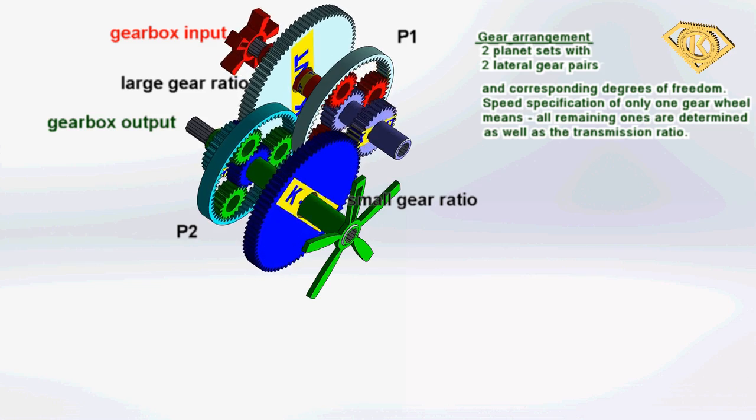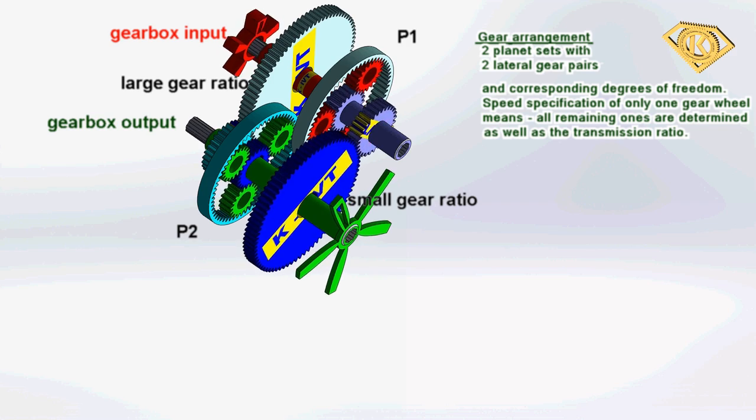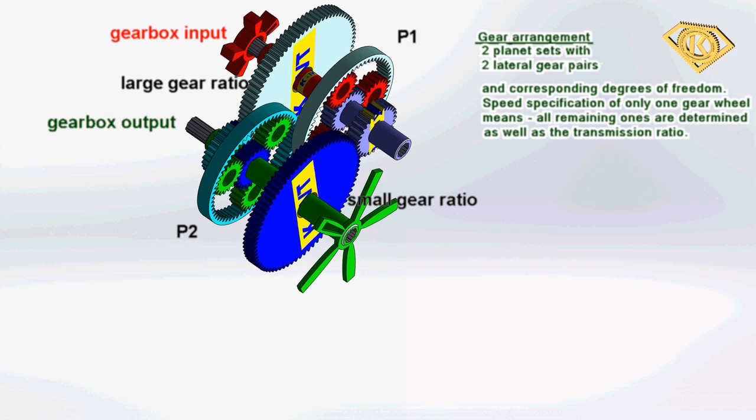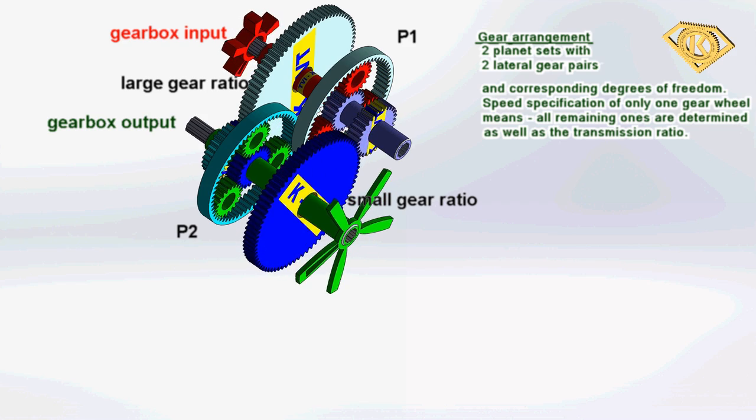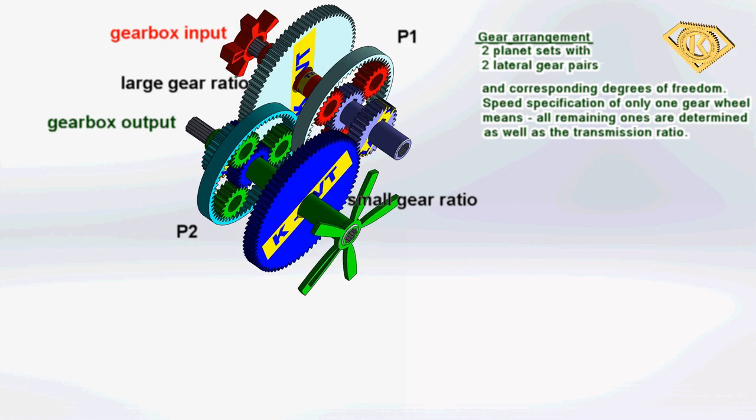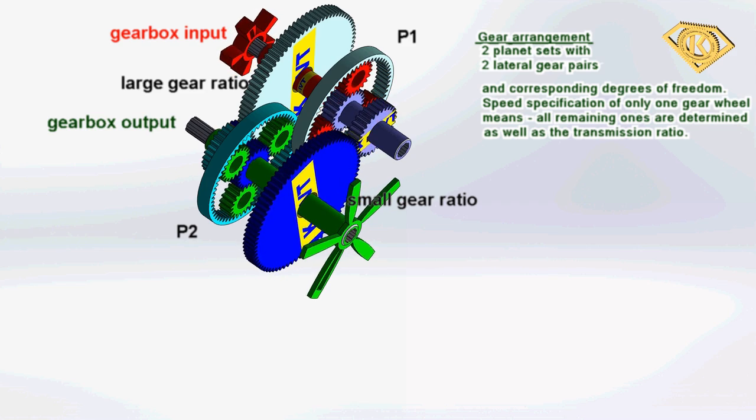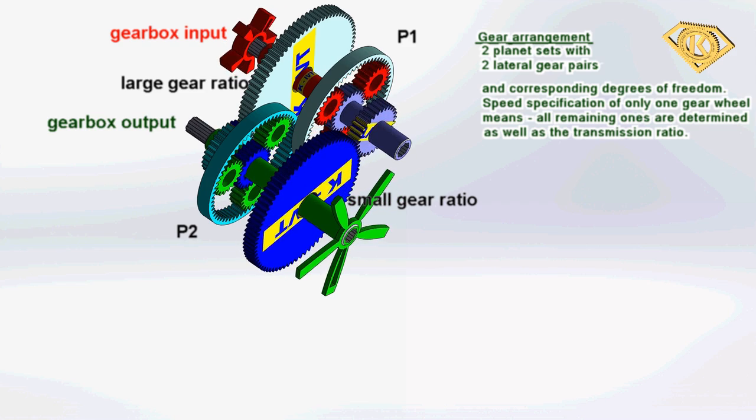If a gear wheel is stopped on the long transmission side, the transmission will work over the short transmission side. Then we have a low output speed with a high torque, and all other gear wheel speeds and the transmission ratio too are clearly determined.